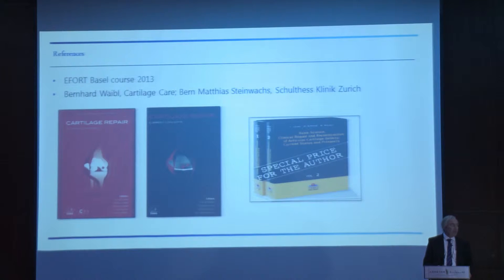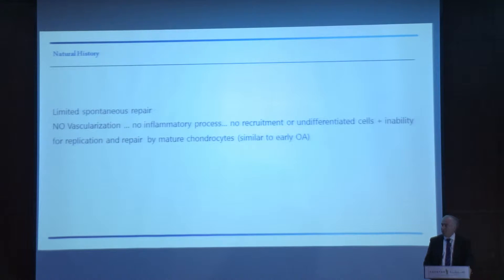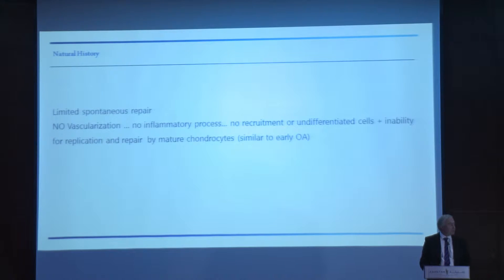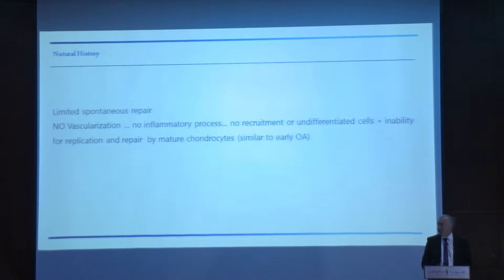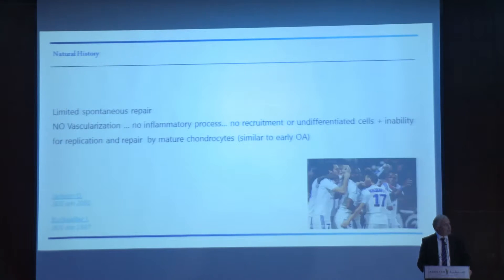It's important to know the natural history. When there is a cartilage lesion, there is very limited spontaneous repair because there is no vascularization, no inflammatory process, no recruitment of undifferentiated cells, and there is an inability for replication and repair. So it's not good news, because if we do nothing, it cannot repair.